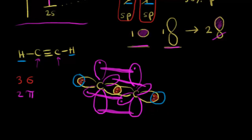Looking at the dot structure, the bond between carbon and hydrogen is a sigma bond. In the triple bond between the two carbons, one is a sigma bond and the other two are pi bonds. So we have three sigma bonds total and two pi bonds total in acetylene. Remember, pi bonds prevent free rotation — we cannot freely rotate about the sigma bond between the two carbons because of the pi bonds, so there is no free rotation around a triple bond.